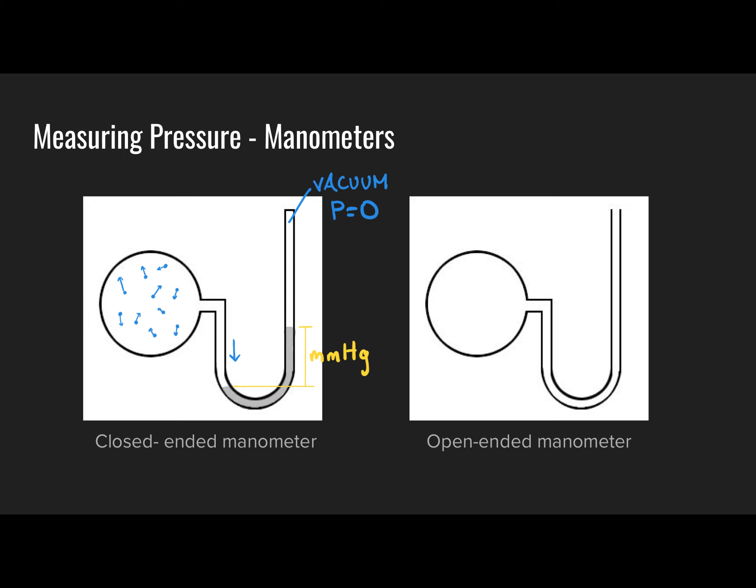For example, if the column rises to a height of 500 millimeters on the right side, that implies the pressure of the gas inside the bulb is 500 millimeters of mercury. Note that the column appears to be sucked up — but in chemistry, nothing sucks. A vacuum is the absence of anything, and the absence of something cannot perform an action like sucking. What's really happening is the mercury is being pushed from the opposite side. The height of the column of mercury literally equals the pressure of the gas inside the bulb in units of millimeters of mercury.